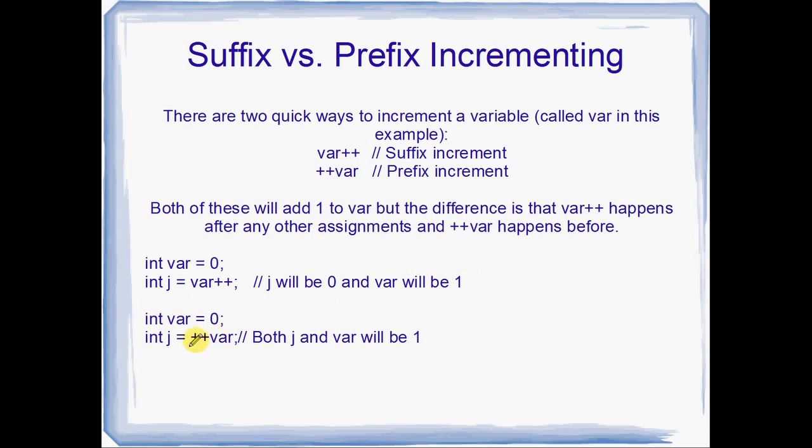Otherwise, if we want to use the prefix increment, then the ++ actually happens before the assignment. So right here, once again, we've got var set to zero, and j equals ++var. That ++, or the increment on var is going to happen before var is set to j. So var is going to be incremented to one, then j is going to get the value of var. They're both going to have one in the end.